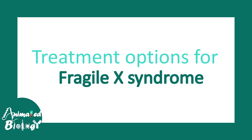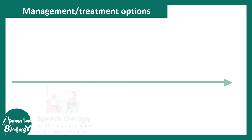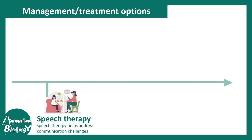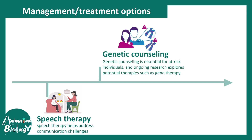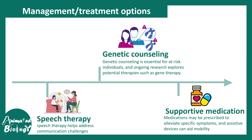Since GABAergic signaling is altered, researchers are trying GABA agonists, with many clinical trials attempting to improve GABAergic input and dampen the excitatory overdrive in the circuits. For overall management, since these children don't talk much, speech therapy and language therapy are important. Genetic counseling and supportive medications like SSRIs and dopamine agonists can improve the situation somewhat, but these are all ways of managing symptoms, not curing the disease.